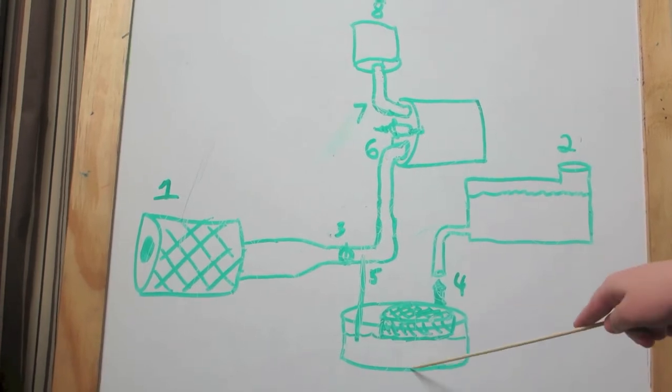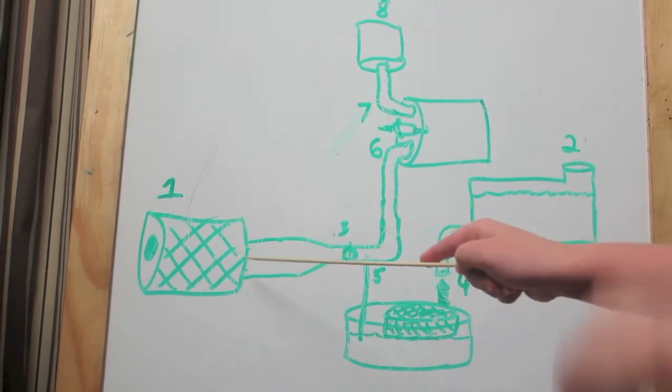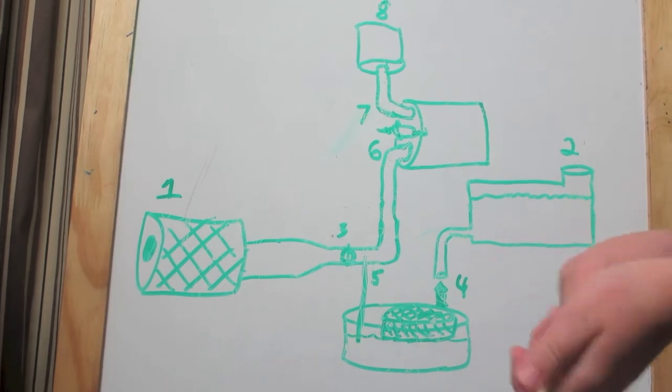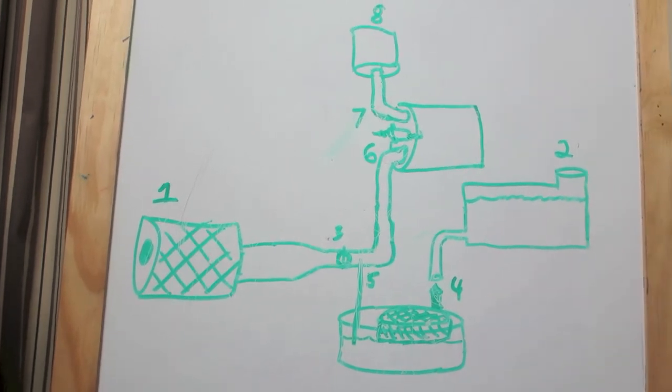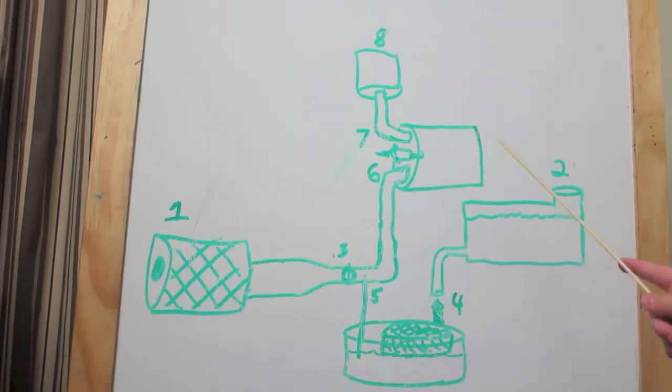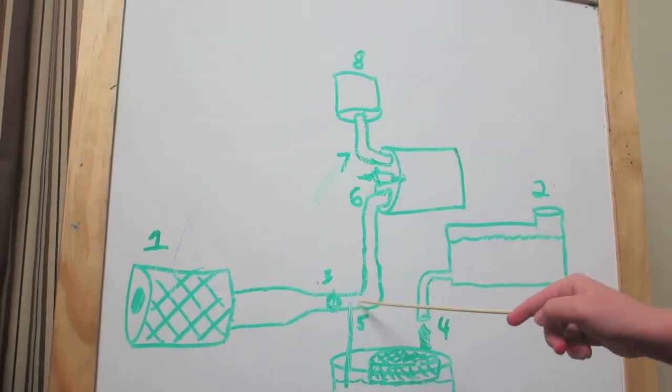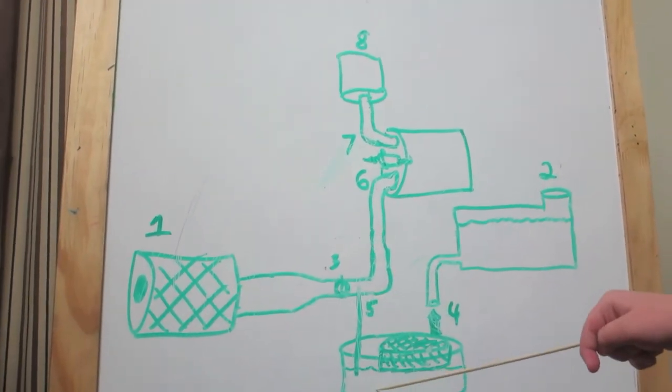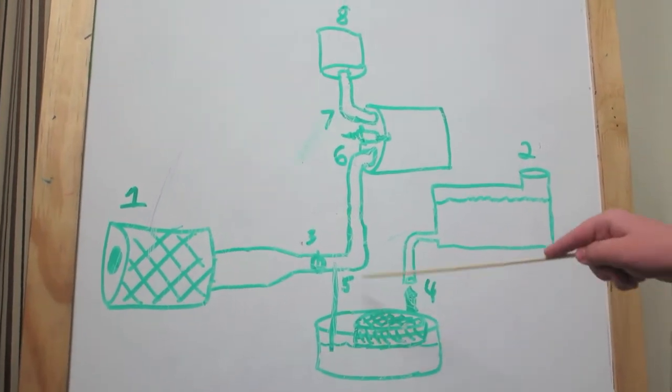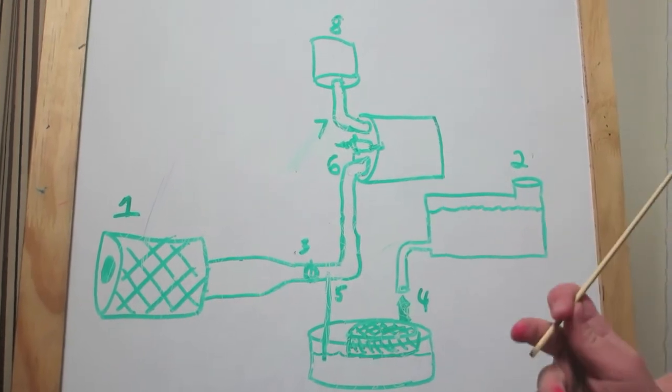Then there's a straw - since the air goes through here because of Bernoulli's principle, the video will be in the description, it will make this low pressure air suck in this gas and then it'll flow up into the piston chamber.